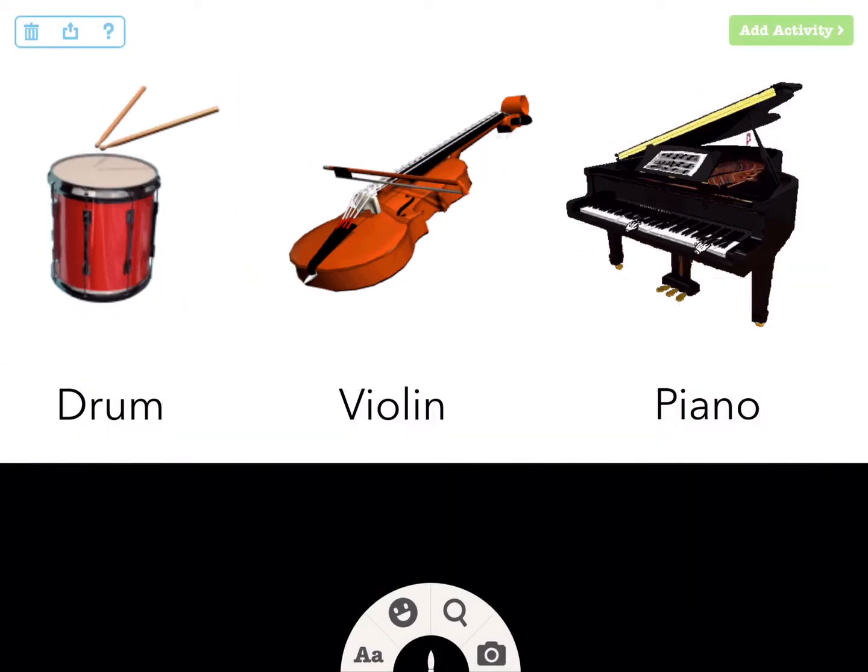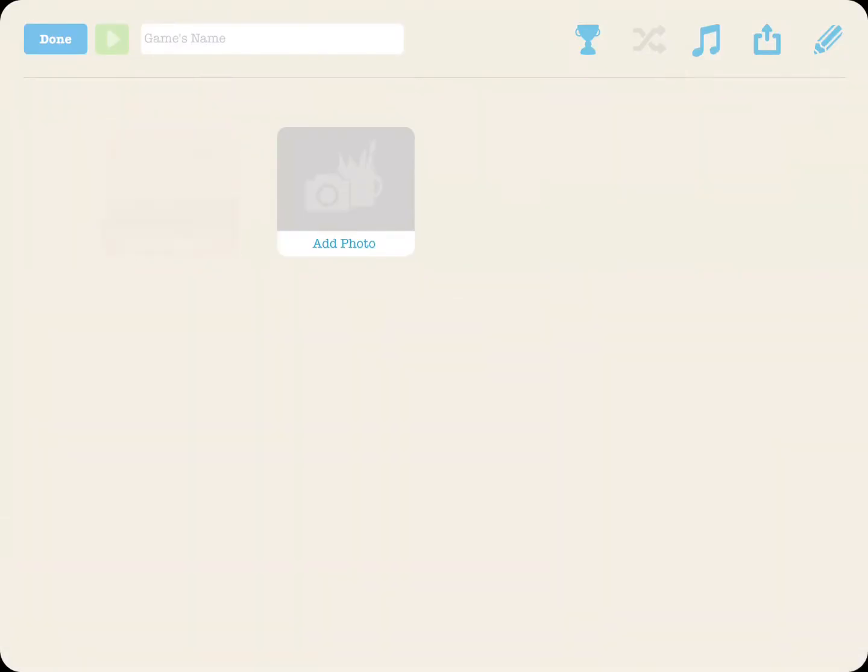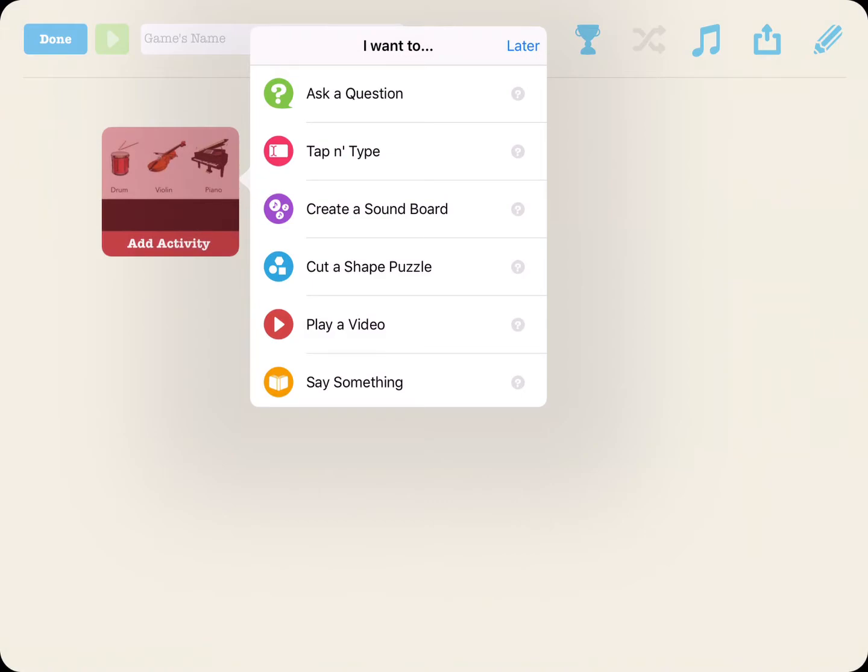When your design is complete, tap Add Activity and Next to carve your puzzle. Select Cut a Shape Puzzle from the menu of Interactive Layers.